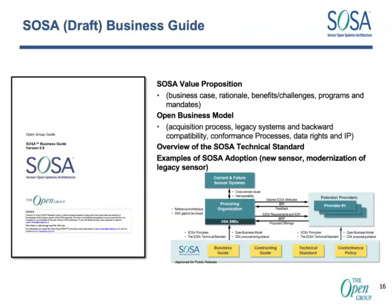From a business point of view, we will be developing business guides. These business guides in terms of a value proposition talk about business cases, the rationale behind them, the benefits, challenges, programs, and those mandates. There is an open business model that talks about an acquisition process, legacy systems and backward compatibility, conformance — and that ties into the conformance program itself, so there is communication between the two. From the business point of view, you know what you need to do to become conformant, and additionally, what your data rights and IP protections are as you're developing for SOSA. There's also an overview of the technical standards and some examples of adoption, as you see in the graphic.